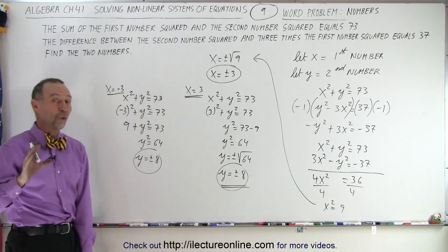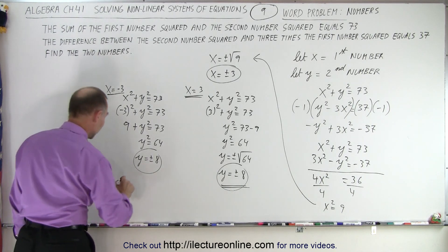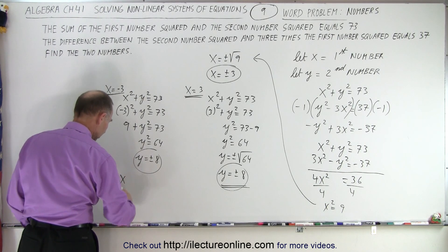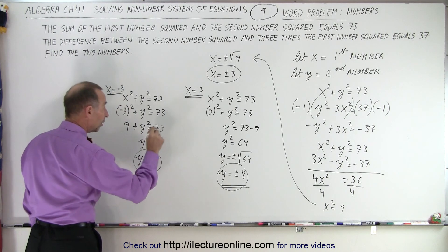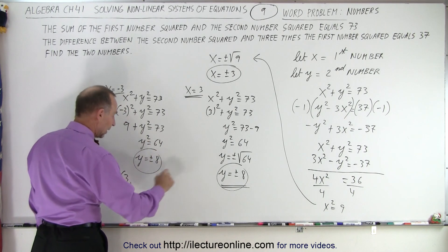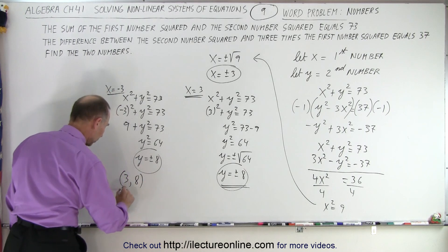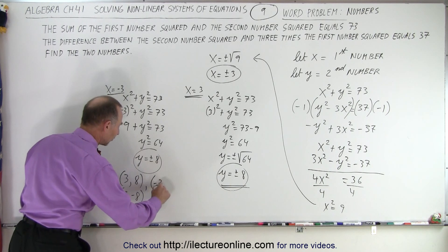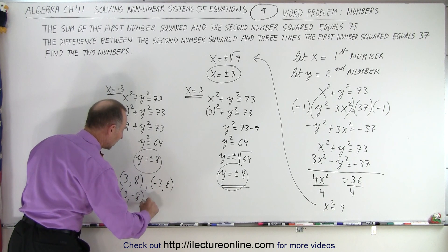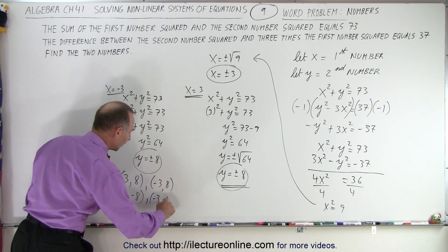But that does mean we have four possible solutions. The four possible solutions are when x equals 3, y is 8. Or when x equals 3, y is negative 8. Or when x equals negative 3, y is 8. Or when x equals negative 3, y is negative 8.